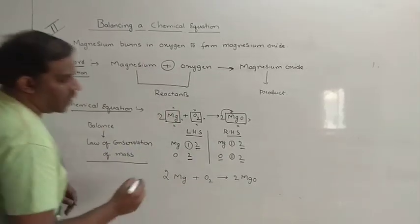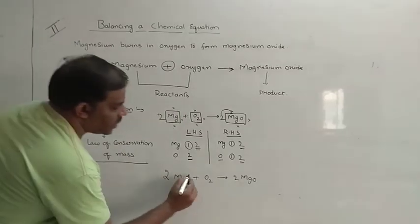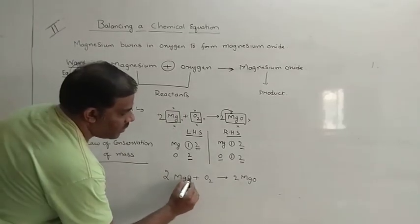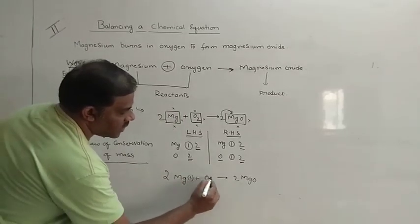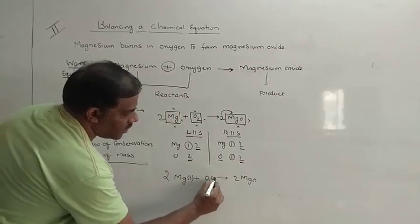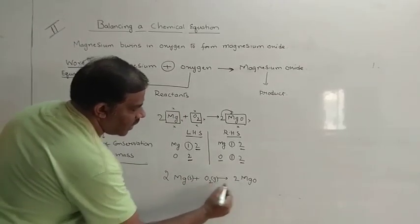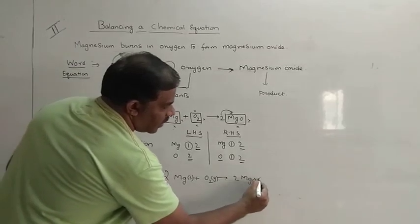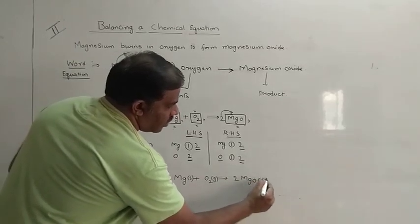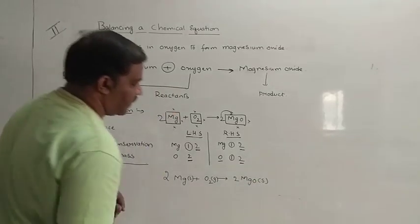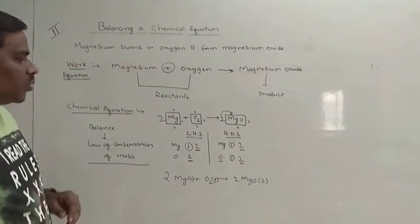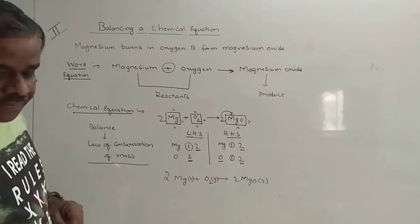So here magnesium is a solid, which is its physical state, oxygen is in the form of gas, and they give rise to a solid product. Let us take one more example.